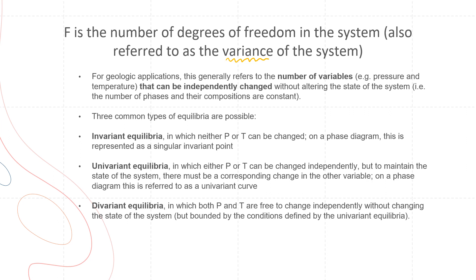There are three common types of equilibria that are possible. The first is invariant equilibria, in which neither pressure nor temperature can be changed on a phase diagram. This is represented as a singular invariant point — you will find it as a point on the diagram.